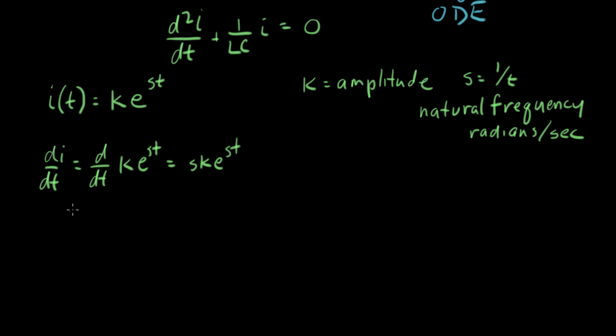And now we need the second derivative, so we want to take the derivative of this. So second derivative of I with respect to time equals the derivative of the first derivative of s k e to the st, and that equals another s comes down, so it's s squared k e to the st.